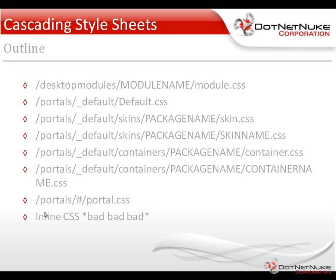It's also possible to have a skin-name-specific CSS file. So if your skin is called homepage or your skin is called admin page, you might have a CSS file specifically set up for those pages. After that, we're going to load any module containers that are loaded on the page. The same as with skins, we have package names for our containers. Every package will typically have a container.css file, and then individual containers themselves might have a container name.css file within their package.